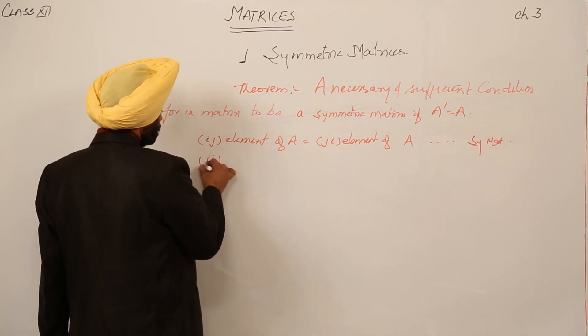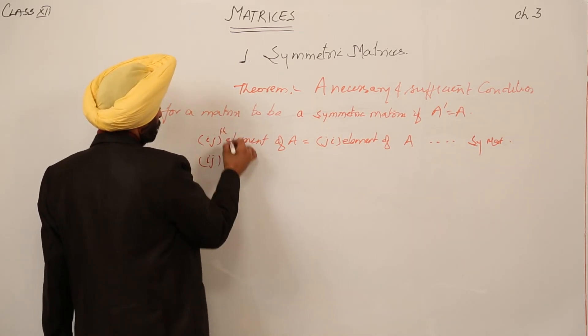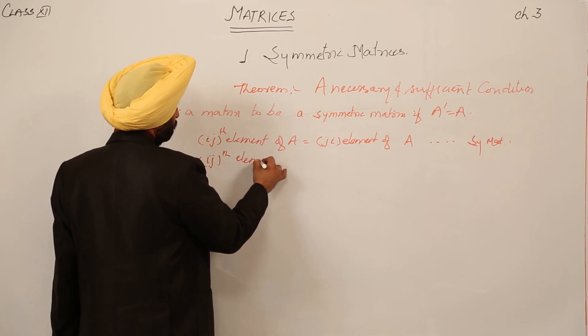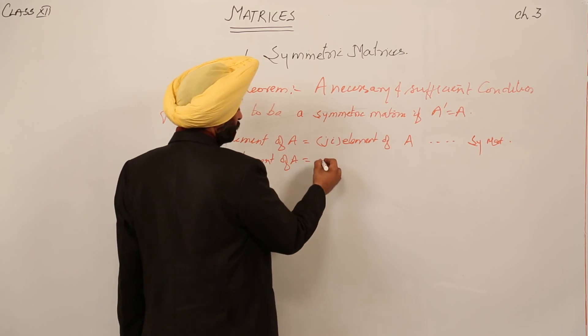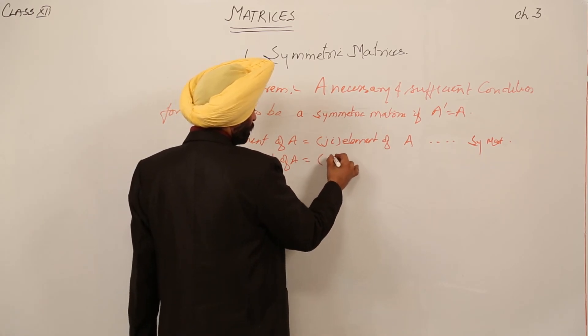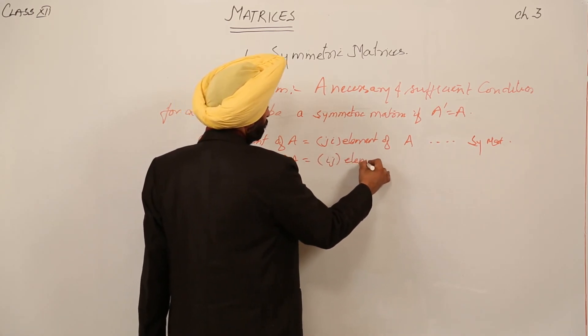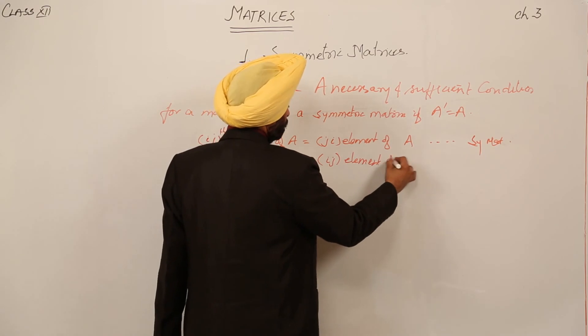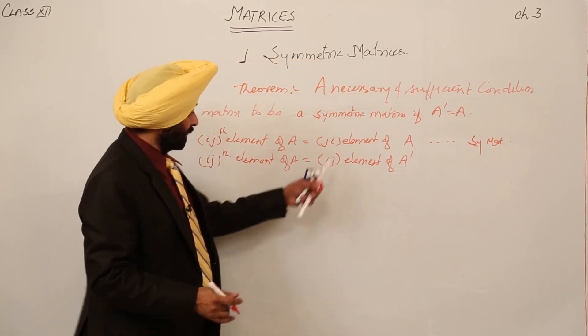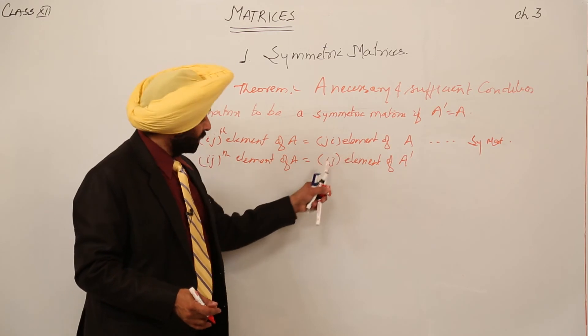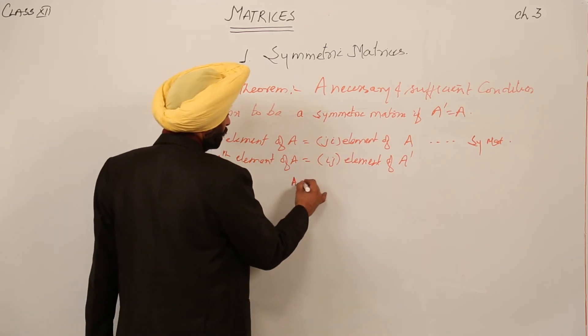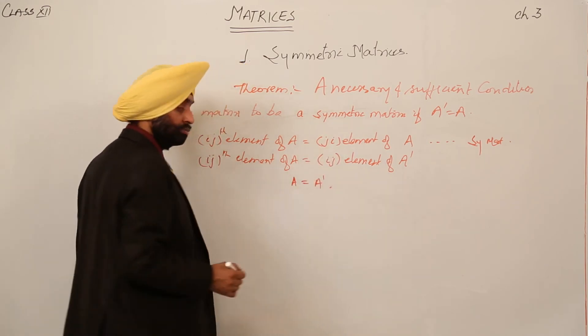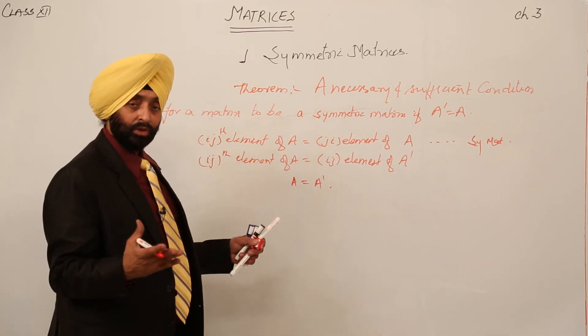Ijth element of A is equal to ijth element of A transpose. If I am doing transpose of this part, then I am getting again ij. So this means what? A is equal to A transpose. Very simple theorem.